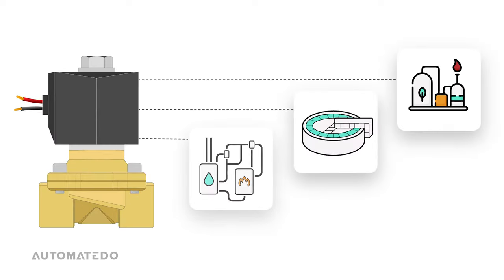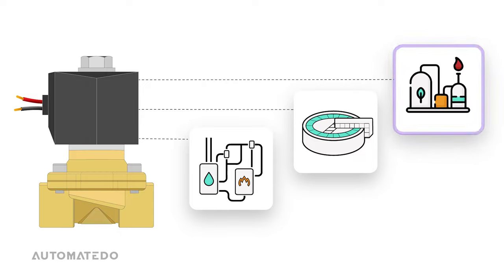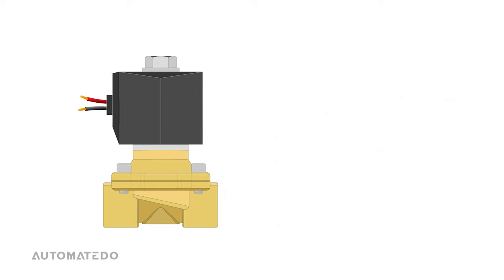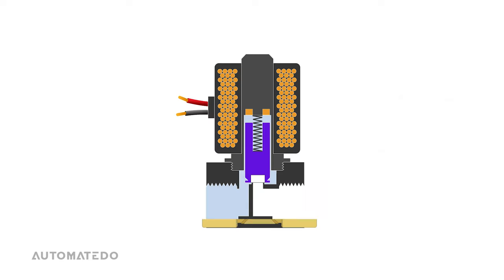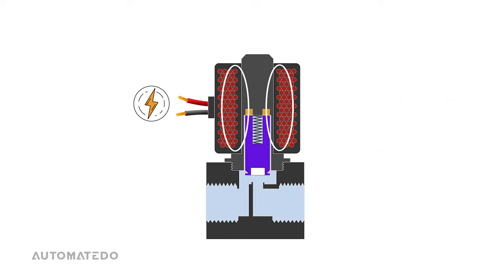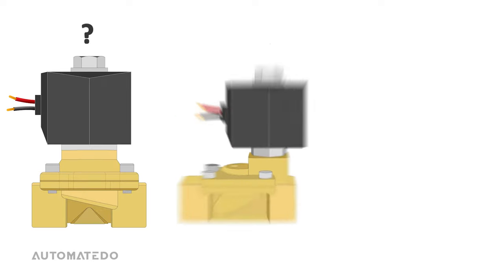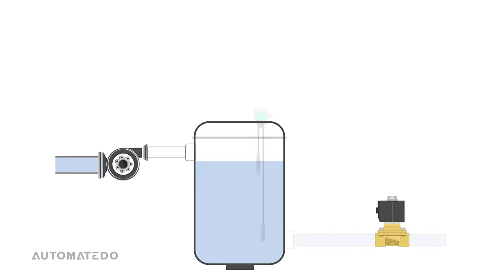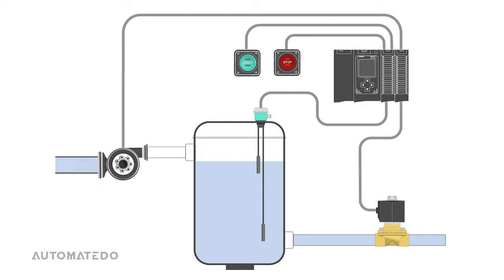The solenoid valve is one of the indispensable tools of industry, used in a wide variety of applications across many industries. In this video, we will discuss how solenoid valves work, cover three types of solenoid valves used in industry, and one of the well-known applications in which the solenoid valve is most frequently used.